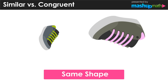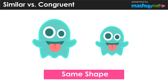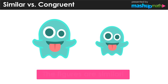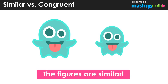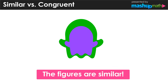Here's another example of two similar figures. The two ghosts are different sizes but have the same shape, even if one is facing a different direction. They are still similar. When we say the same shape, we have to be specific: the two figures are proportional to each other, which we can illustrate by overlapping them. We can see the figures are similar, but since they are not the identical same size, they are not congruent.